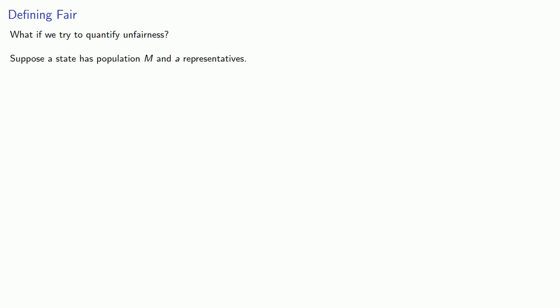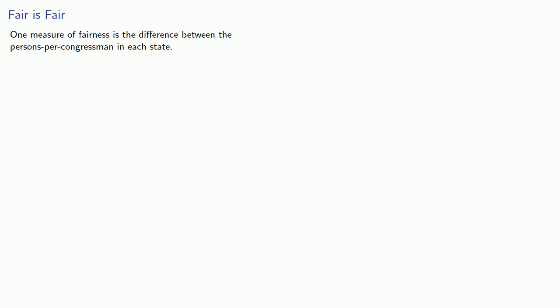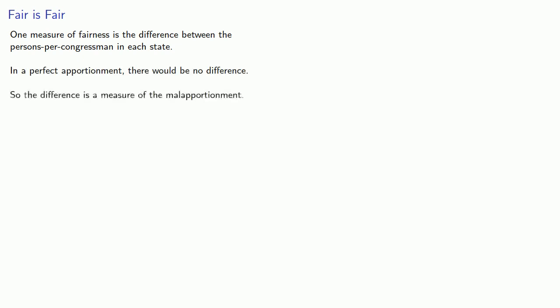Apportionment is the problem of a fair division of a discrete resource. But what does that really mean? What if we try to quantify unfairness? Suppose a state has population M and A representatives. Then the quotient M divided by A represents the number of persons represented by each congressman. This suggests that one measure of fairness is the difference between the persons per congressman in each state. In a perfect apportionment there would be no difference, so the difference is a measure of the malapportionment.